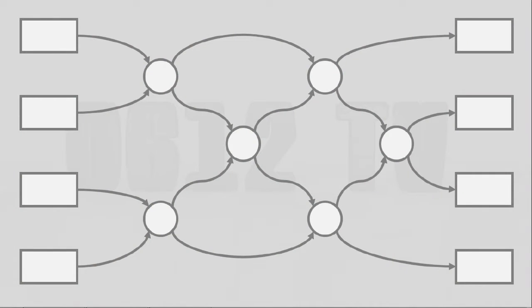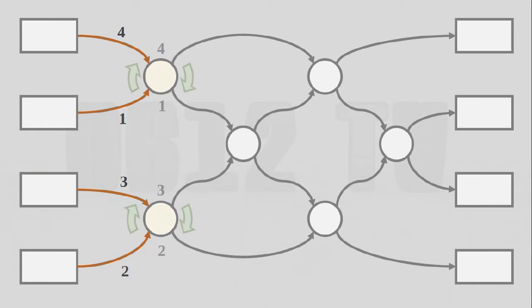Since we already know how the odd even transposition sort actually works, today we're gonna be actually using that as an example. A sorting network basically presents a sorting algorithm like it was a circuit. Essentially, it looks something like this. What we have to do is we have to insert all the numbers we want to sort on the left side, and basically they're gonna move slowly towards the right. As you can see, their paths converge from time to time, and whenever they actually meet, a comparison is actually made.